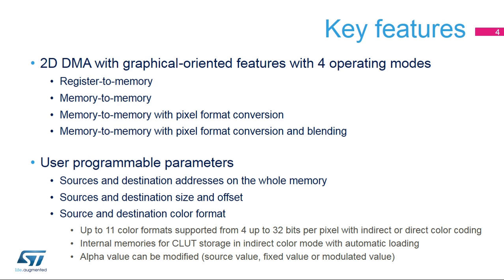Memory to memory with pixel format conversion is used for bitmap drawing with format conversion, and memory to memory with pixel format conversion and blending is used for bitmap or text drawing with transparency. The user can independently program all the parameters for the source and the destination, including the address of the layer, its size and position, the color format, and the way transparency is managed.